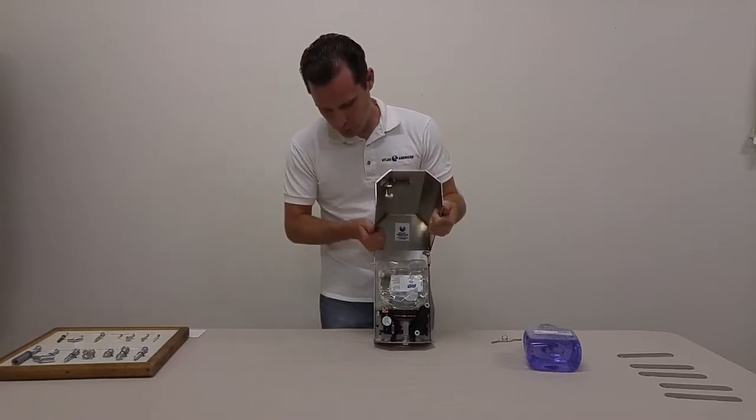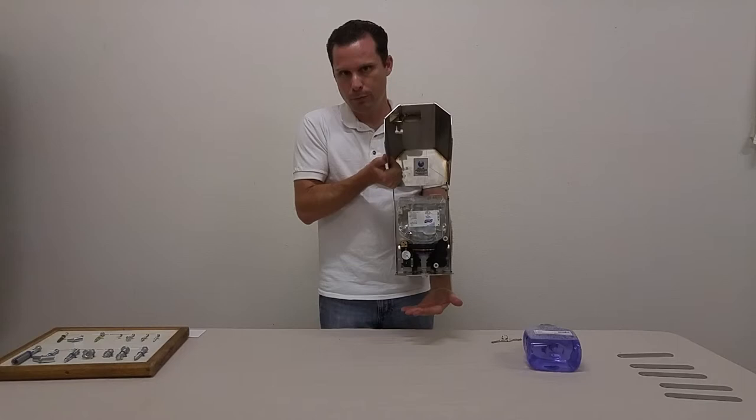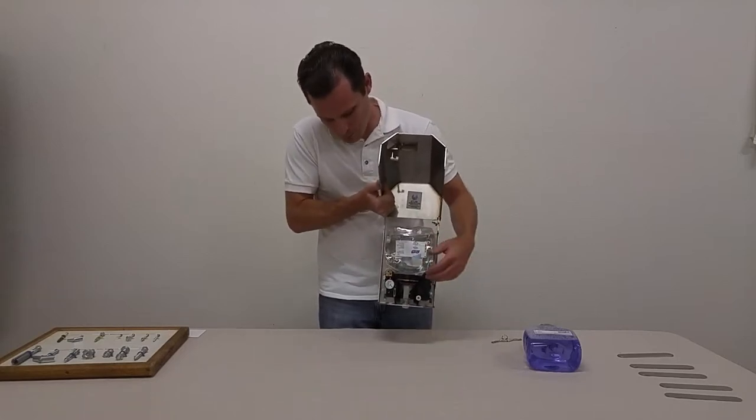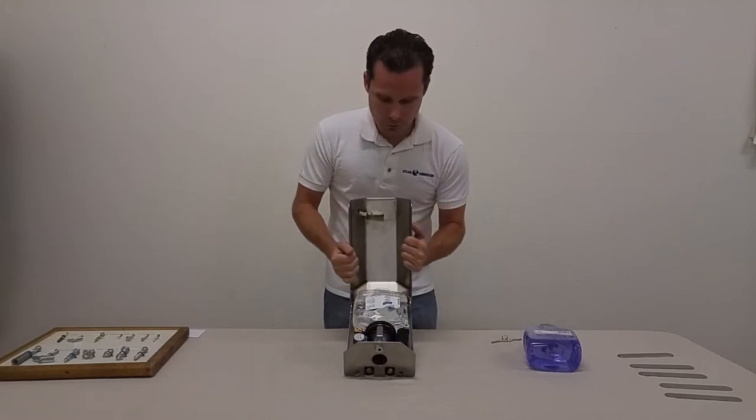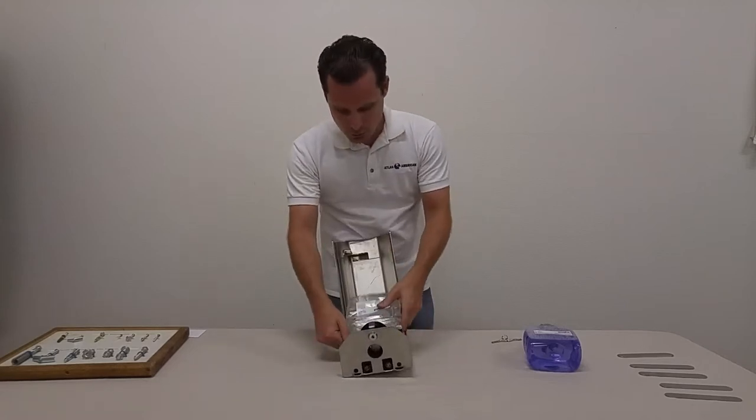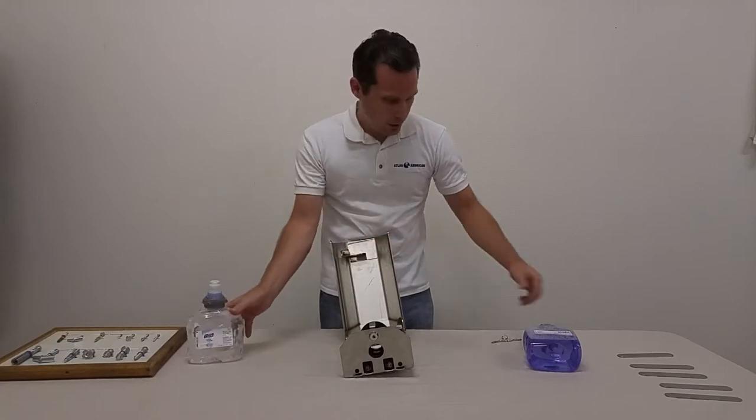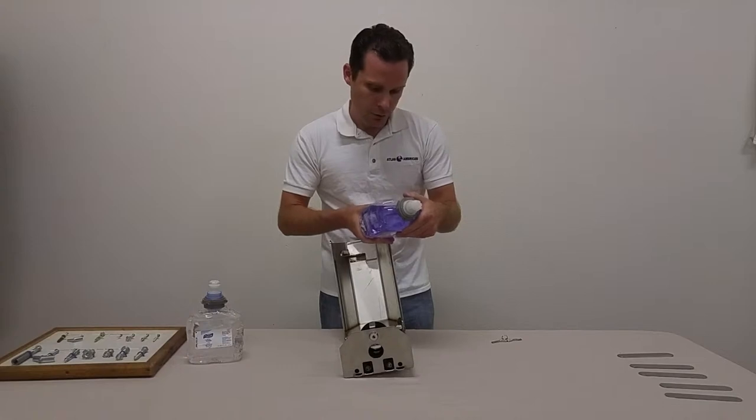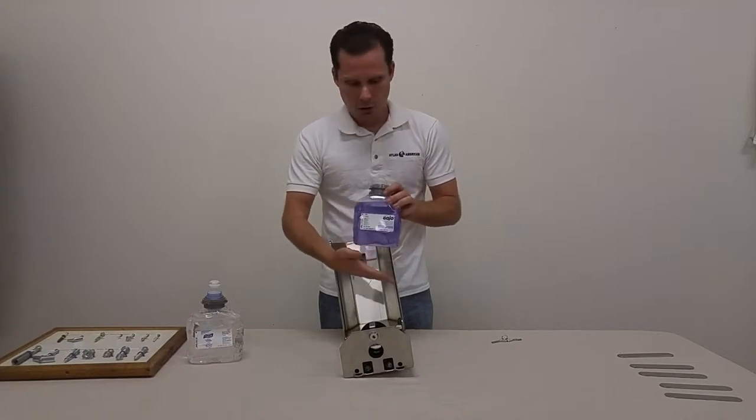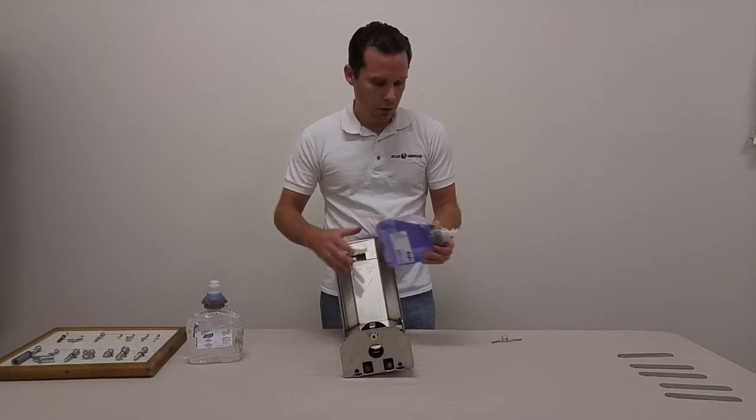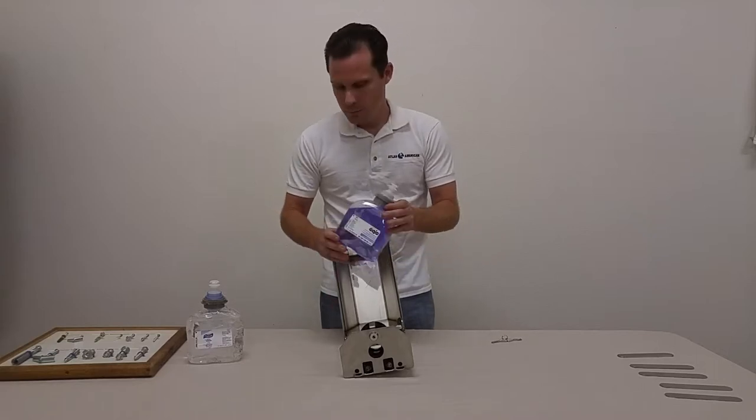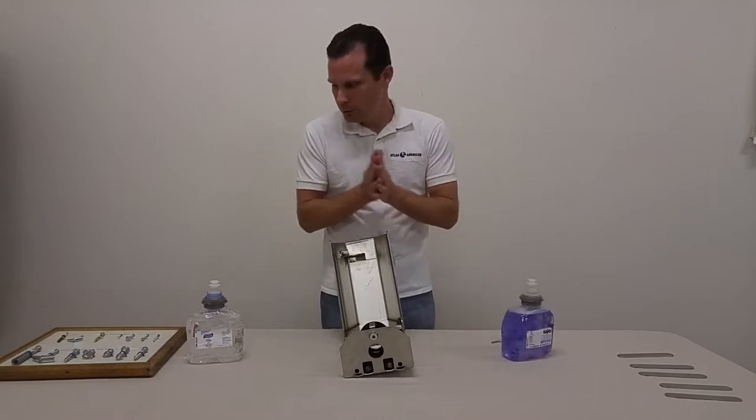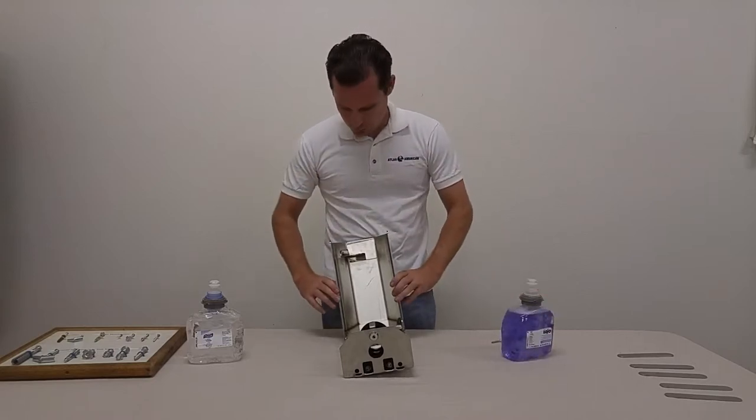When someone comes by, they stick their hand underneath and it dispenses. Now, I don't have any batteries in here, that's why it's not dispensing, but this is an automatic unit. And this is a hand sanitizer. Let me take this out here. Most people actually use it for the soap. This is your standard Gojo 5361 foaming soap. The great thing about foaming soap is that you get so much more soap product for your money. It lasts a lot longer. And it's really just easier for people to use. You don't have to spend a lot of time lathering up the soap. It's kind of foamed up for you.